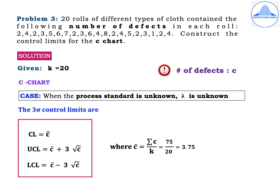Problem 3. 20 rolls of different types of cloth contained the following number of defects in each roll: 2, 4, 2, 3, 5, 6, 7, 2, 3, 6, 4, 8, 2, 4, 5, 2, 3, 1, 2, 4. Construct the control limits for the C chart.